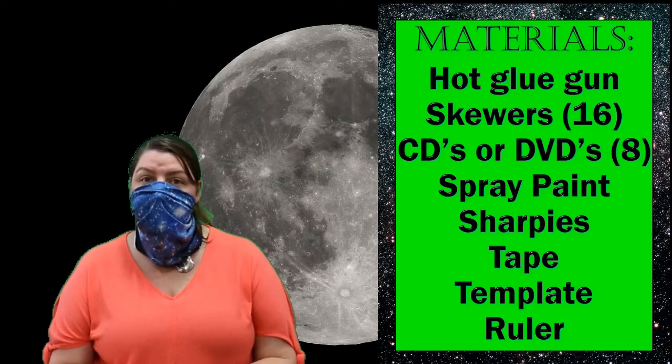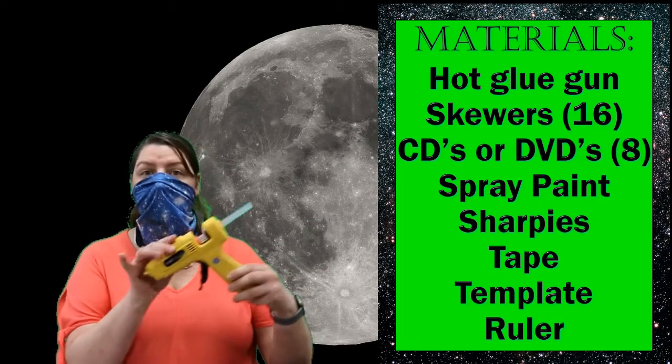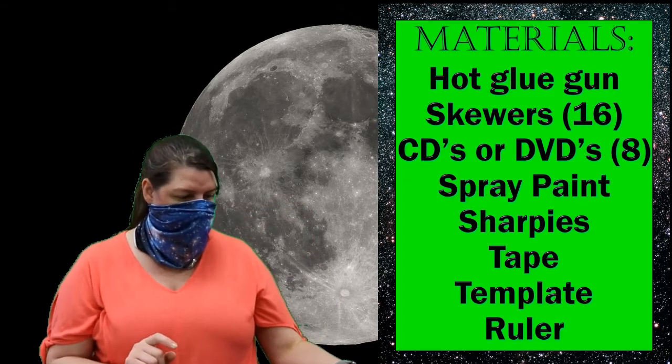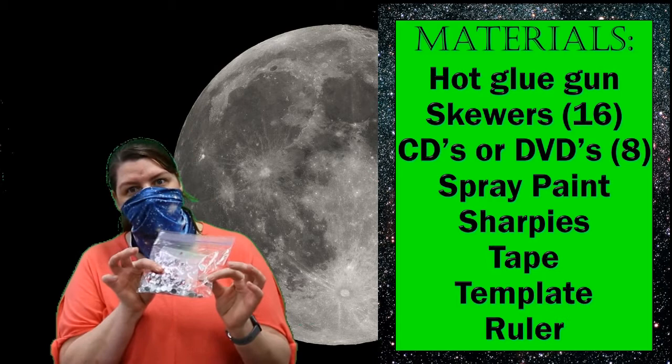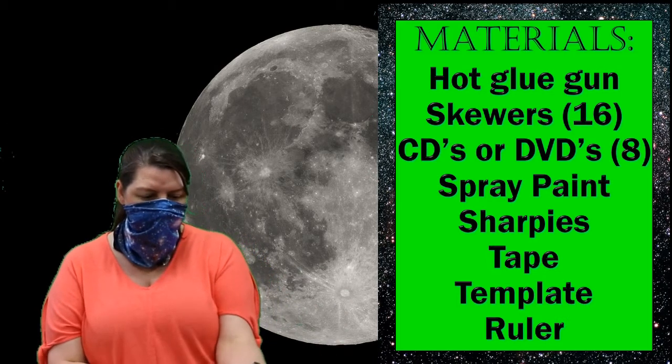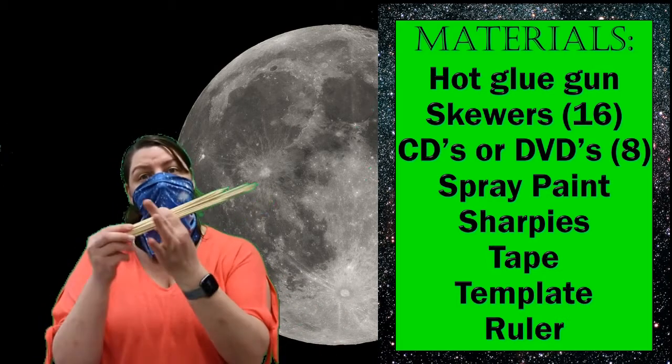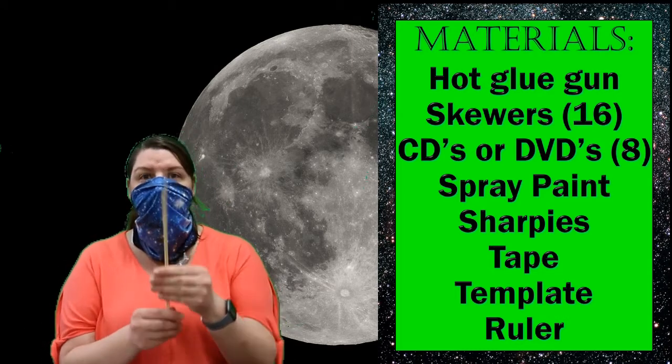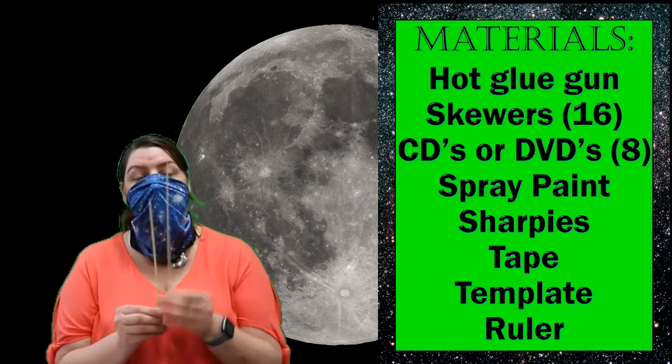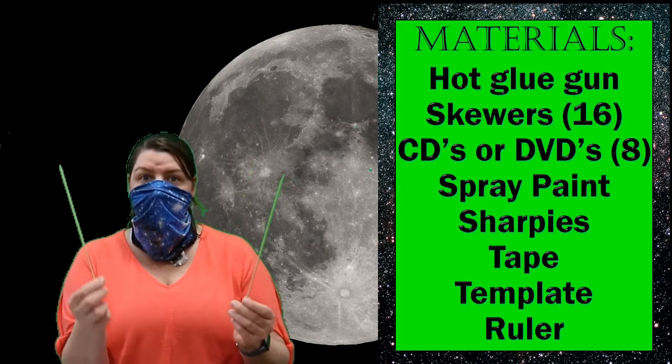The materials that we are going to be using today are a hot glue gun with glue, some rhinestones to add some bling to our design, and 16 bamboo skewers. Now I've chosen to use two different lengths of skewers which would mean that you would need eight long skewers and eight short skewers.